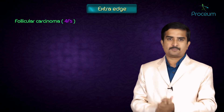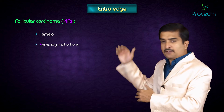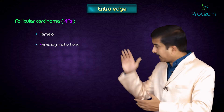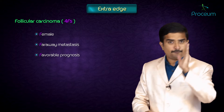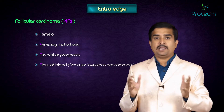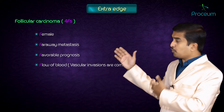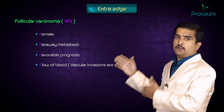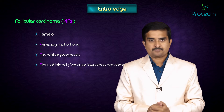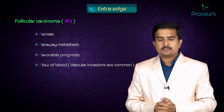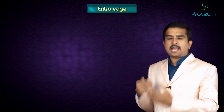For follicular carcinoma of the thyroid, remember four F's: first F is for female; second F is for far-away metastasis; third F is for favorable prognosis; and the fourth F is for flow of blood, because vascular invasion is more common.